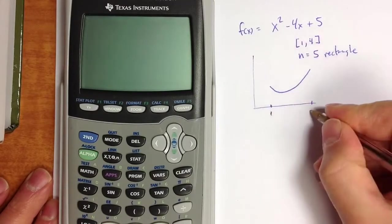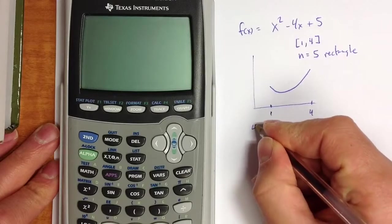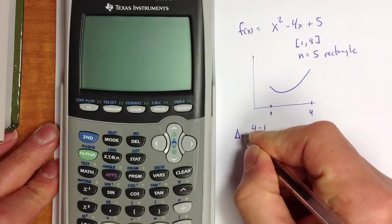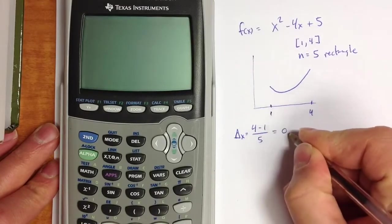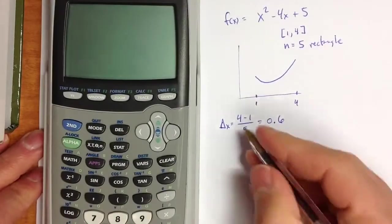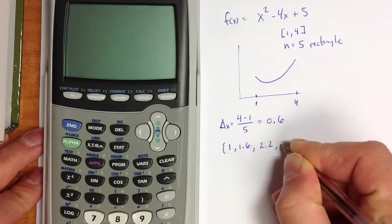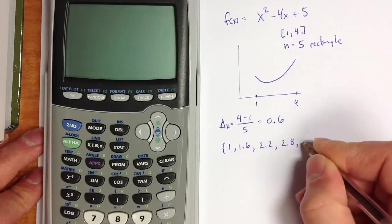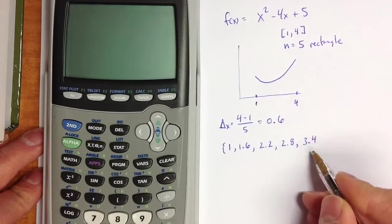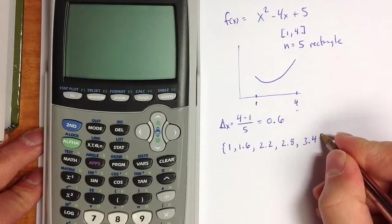If we divide that interval into 5 subintervals of equal width, we get 4 minus 1 divided by 5 as the value for delta x, which turns out to be 0.6. So our left endpoints are going to be 1, 1.6, 2.2, 2.8, and 3.4. Adding delta x one more time would take us to the right limit of 4.